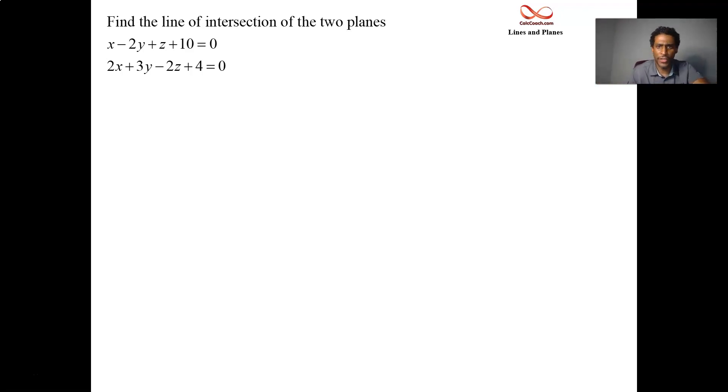All right, so here's the algebra that you go through to find the line of intersection between the two planes. First up we need to eliminate one of the variables. Okay, what's easiest to eliminate? Doesn't really matter. Let's eliminate the z. We're going to eliminate the z.